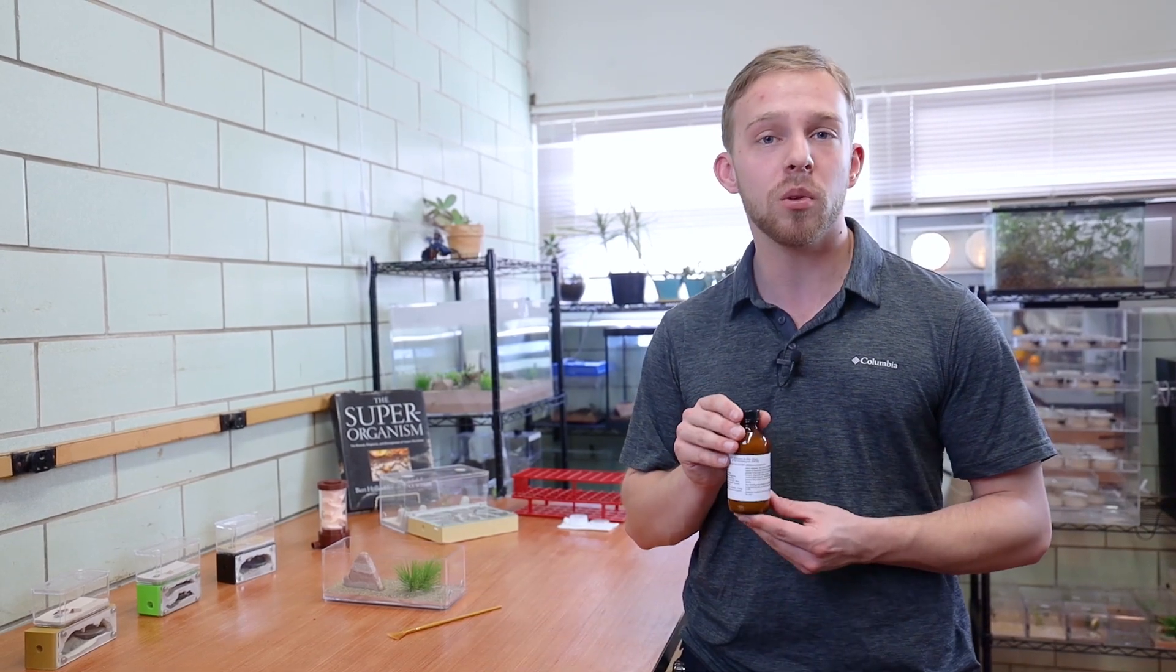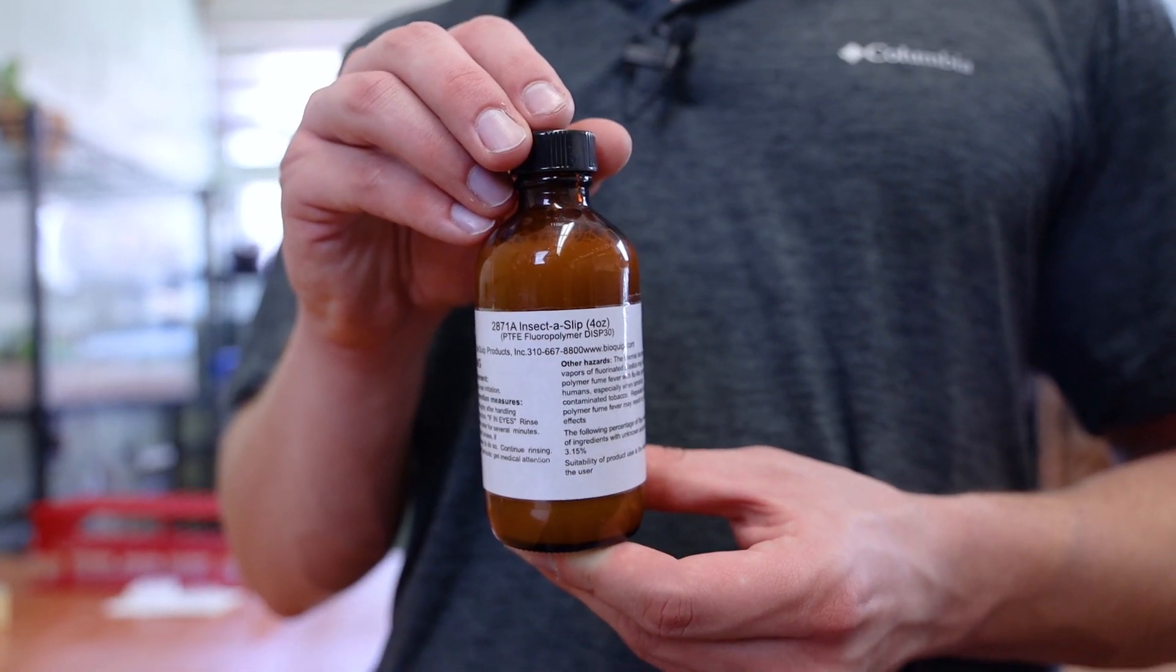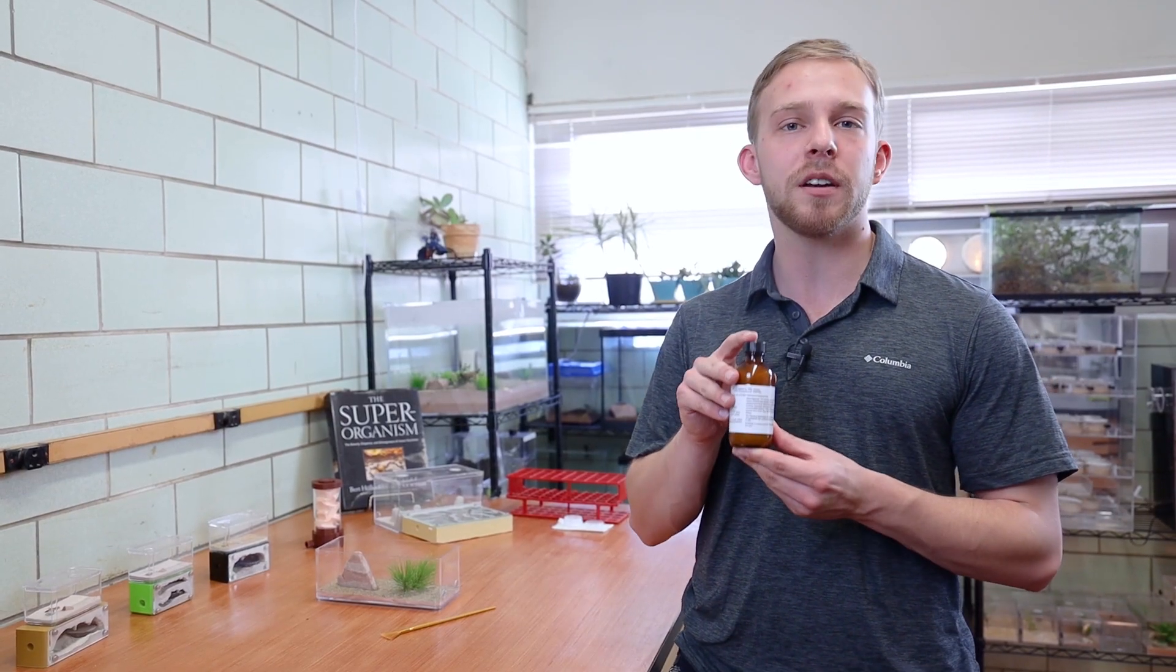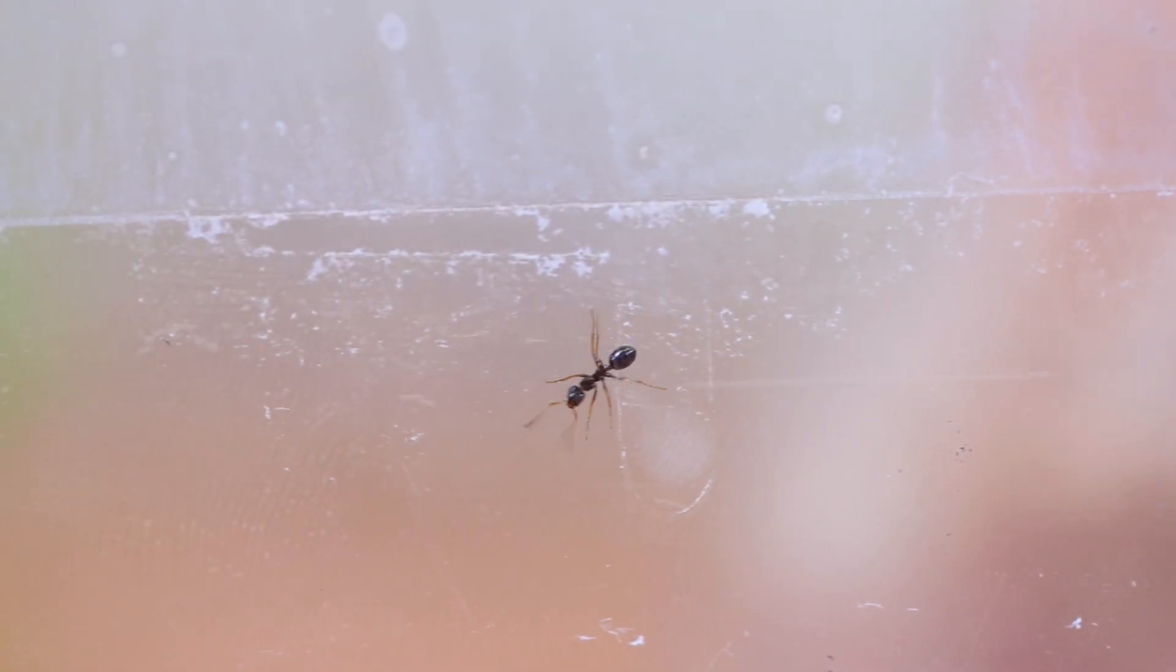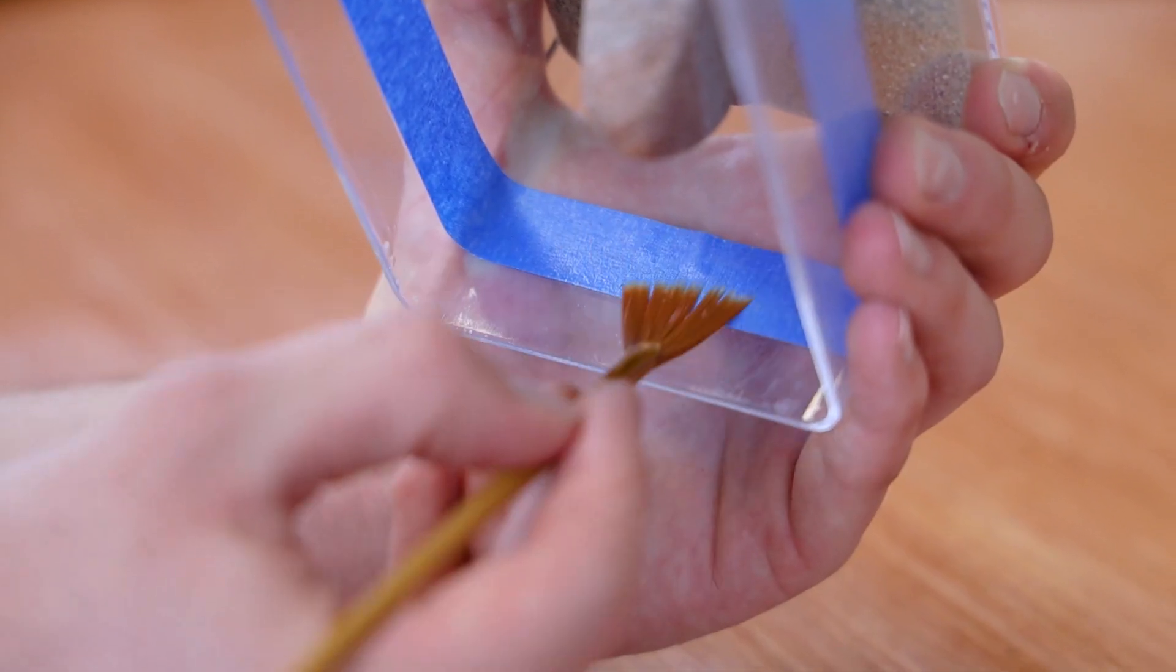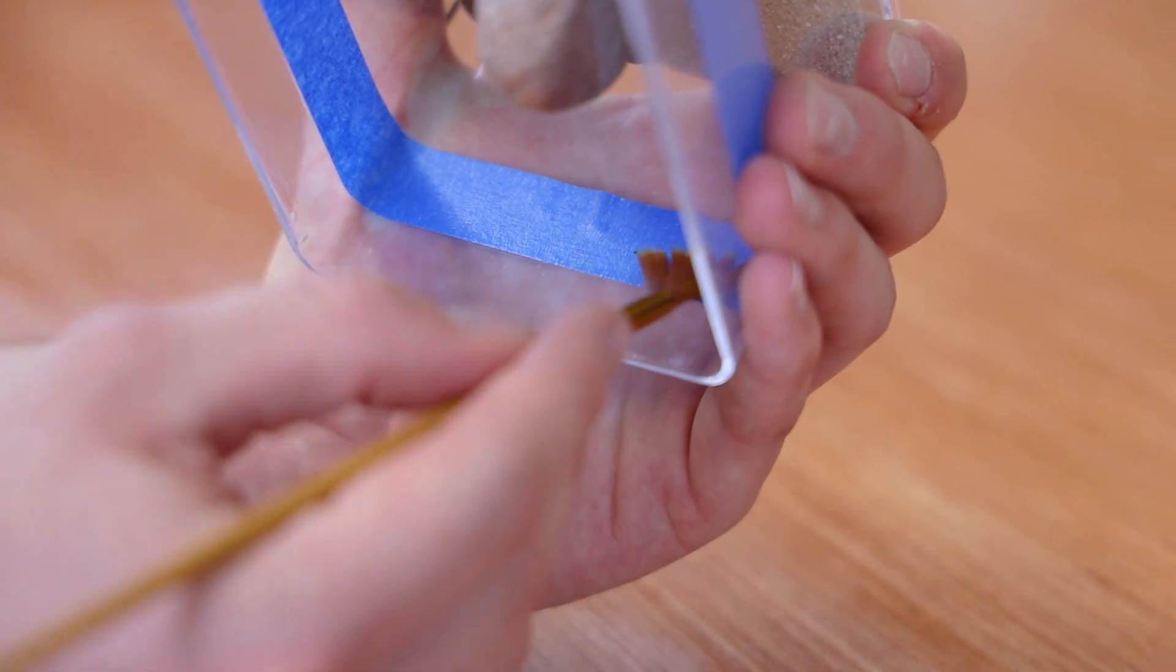Fluon is a ubiquitous tool used in insect laboratories and by ant keepers around the world. When applied correctly, it can be an effective barrier for months or even years. Fluon, also known as Insect-A-Slip, is a paintable Teflon solution that is applied as a liquid and dries as a smooth, thin layer.